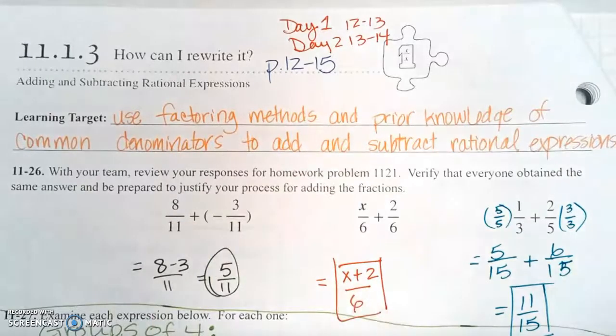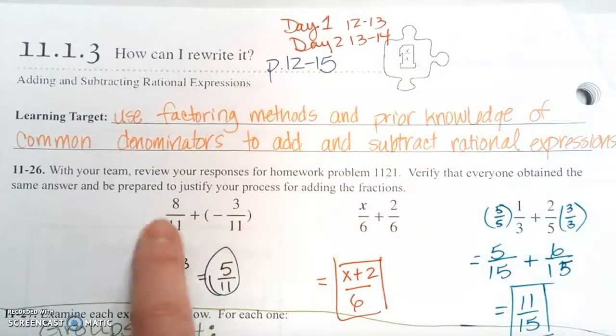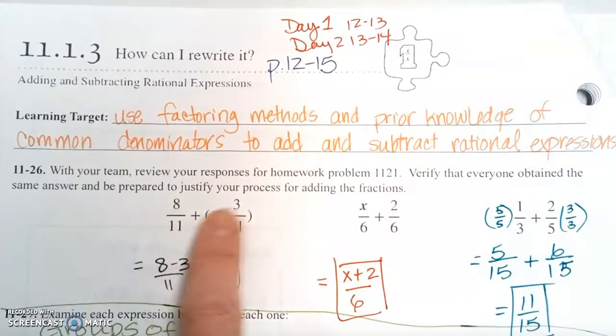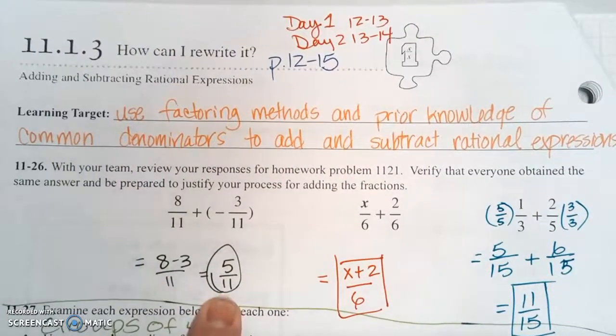Make sure you have common denominators. Both denominators are 11 so we're good. You can just add and subtract the numerators straight across, so 8 plus negative 3 is the same as 8 minus 3, which is 5 over that common denominator of 11.